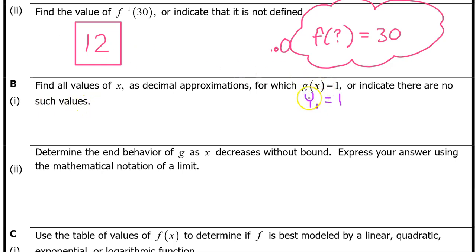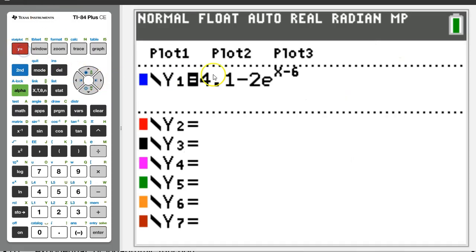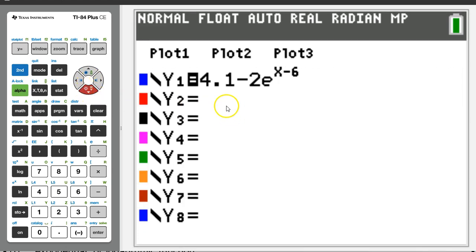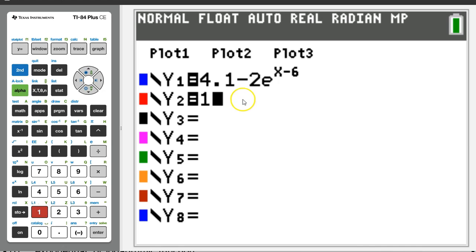Since we entered g of x as y1 on the calculator, we can find where g of x equals 1 by finding where y1 is equal to 1. Go back to the y equals section of your calculator. We can find where y1 is equal to 1 by finding the intersection between y1 and the line y equals 1. So let's let y2 equal 1.